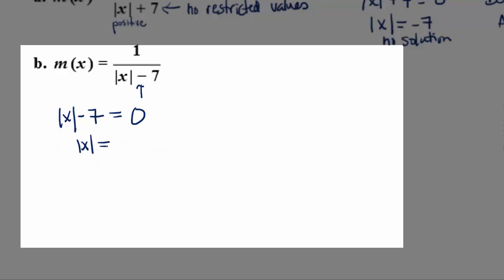Isolating the absolute value, we get absolute value of x equals positive 7, which is possible. In fact, if the absolute value of x is equal to positive 7, there are two possibilities. Either x is 7 or x is negative 7. Well, that makes sense, right? If we were to plug 7 or negative 7 into this denominator, we would get 7 minus 7 equals 0.